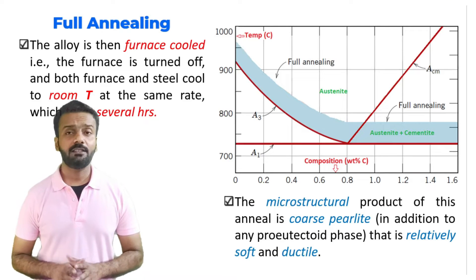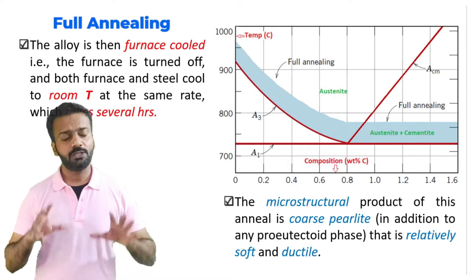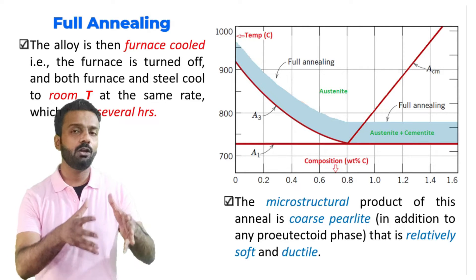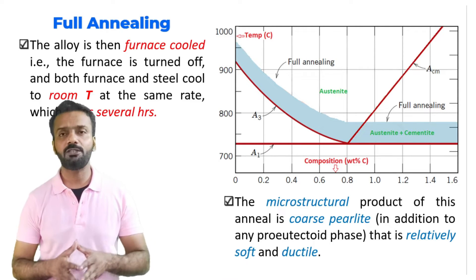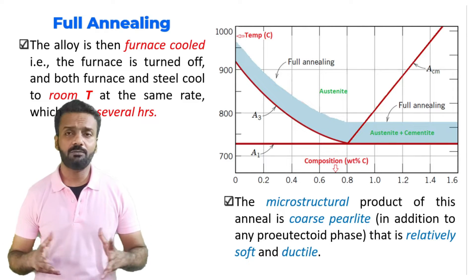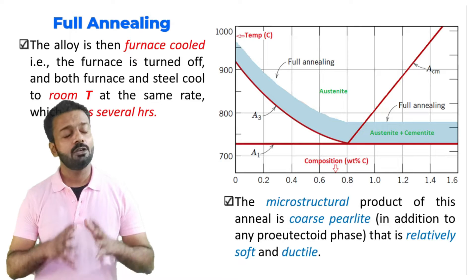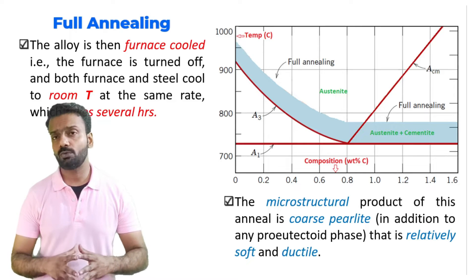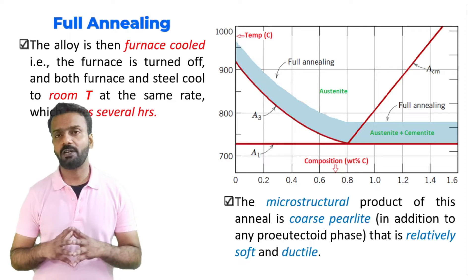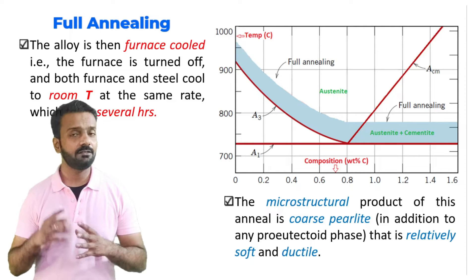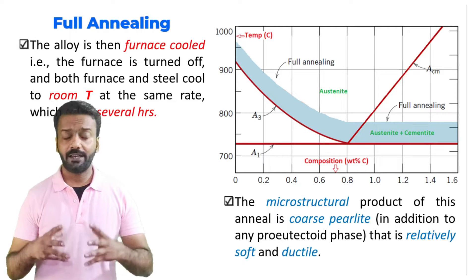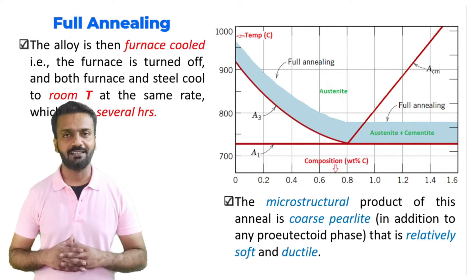In annealing, the material is furnace cooled — you keep the material in the furnace, turn off the furnace, and the material along with the furnace comes to room temperature. This takes a lot of time, sometimes around 20 to 24 hours for the entire furnace to reach room temperature. The result is coarse pearlite, meaning the grains of pearlite are very large in size, which makes the material softer and more ductile.